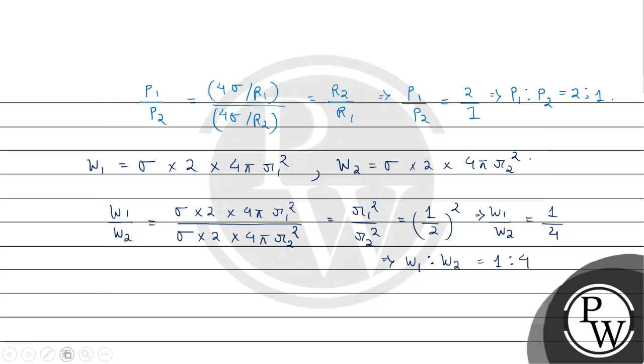So here we get the final answer. The ratio of excess pressure is P1 is to P2 equals to 2 is to 1, and the ratio of work done is W1 is to W2 equals to 1 is to 4. So hope you understood it well. Best of luck. Thank you.